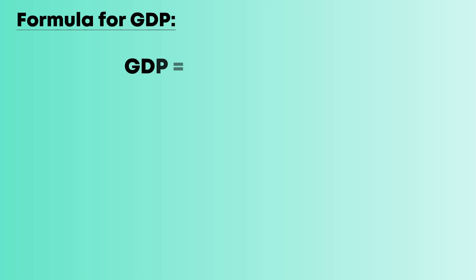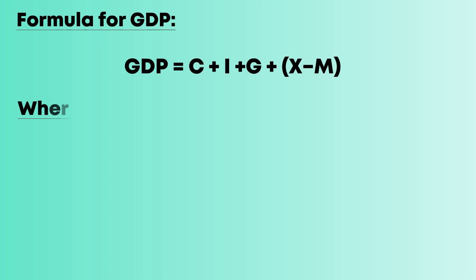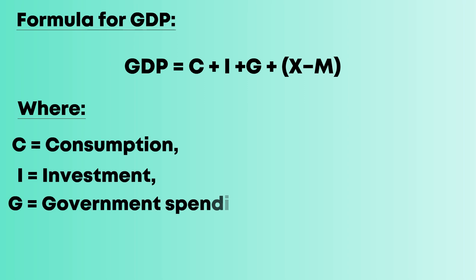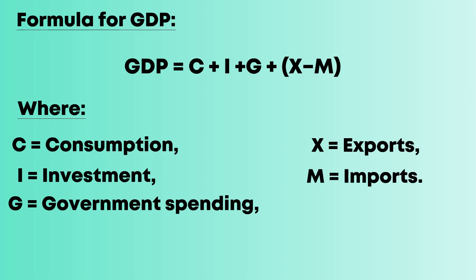Formula for GDP: GDP equals C plus I plus G plus X minus M. Where C equals consumption, I equals investment, G equals government spending, X equals exports, and M equals imports.